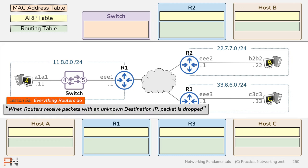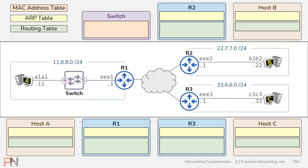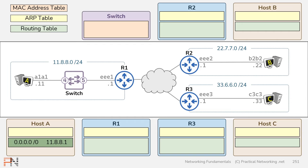Recall that back in lesson five, we said that if a router receives a packet with a destination IP address not in the routing table, that packet would be dropped. So if our hosts started sending packets now with empty routing tables, everything would be dropped. Therefore, the routing tables must be populated before any data can be sent. Host A only needs a default gateway — also known as a default route. The default route is represented as a route for the 0.0.0.0/0 network, which includes all IPv4 addresses. This route points to the IP address of router 1's interface: 11.8.8.1. This tells host A to use router 1 anytime it's trying to speak to anything on a foreign network.